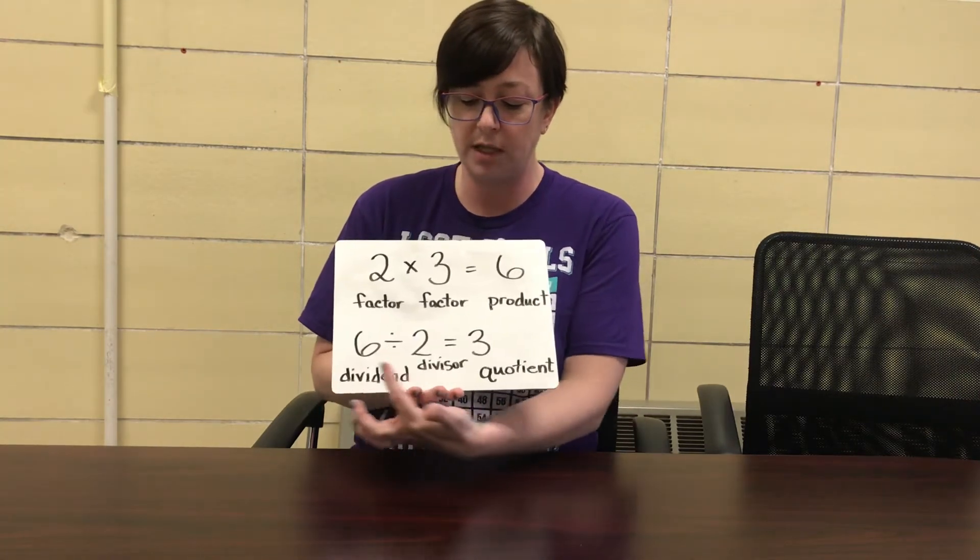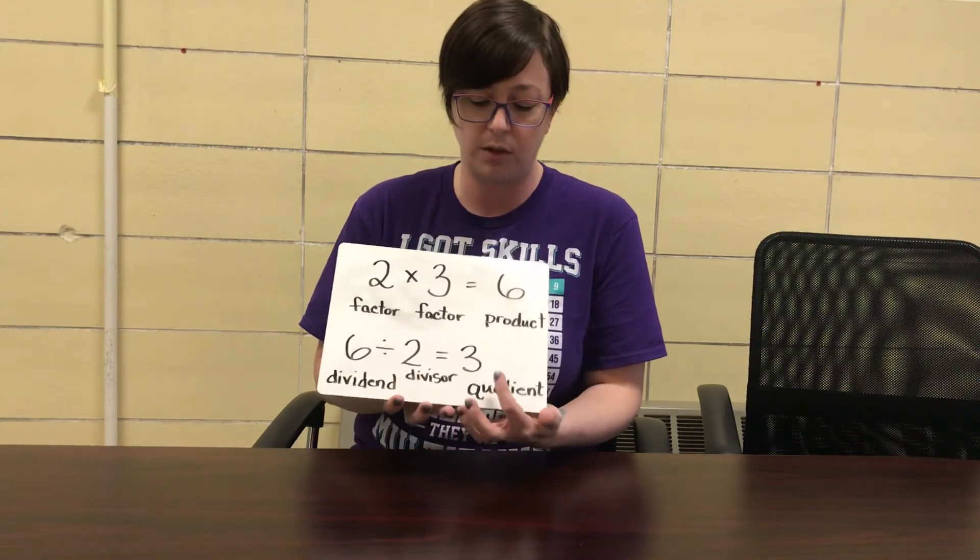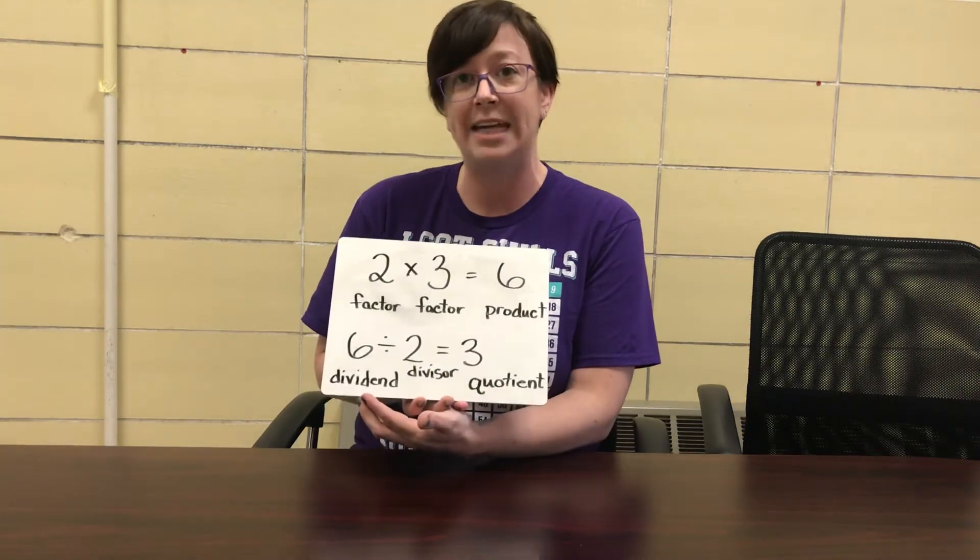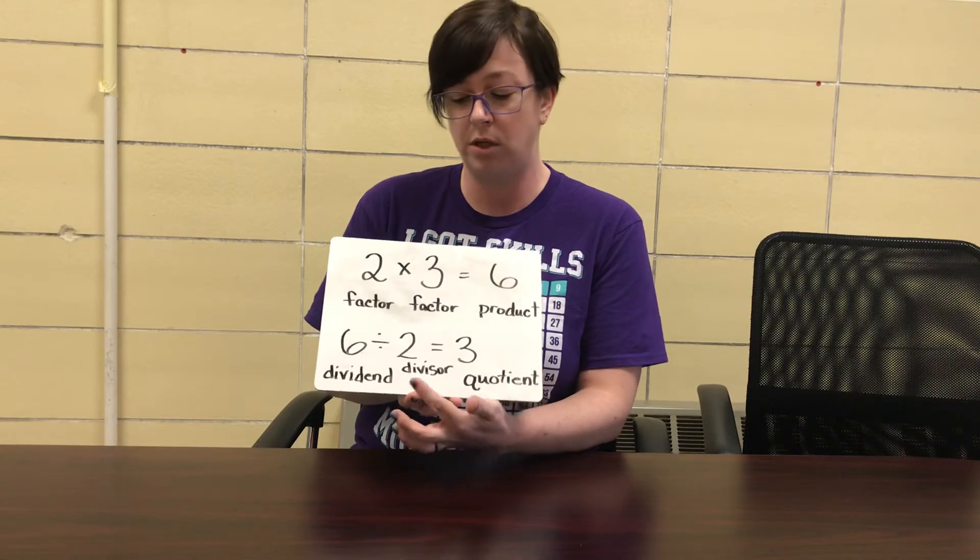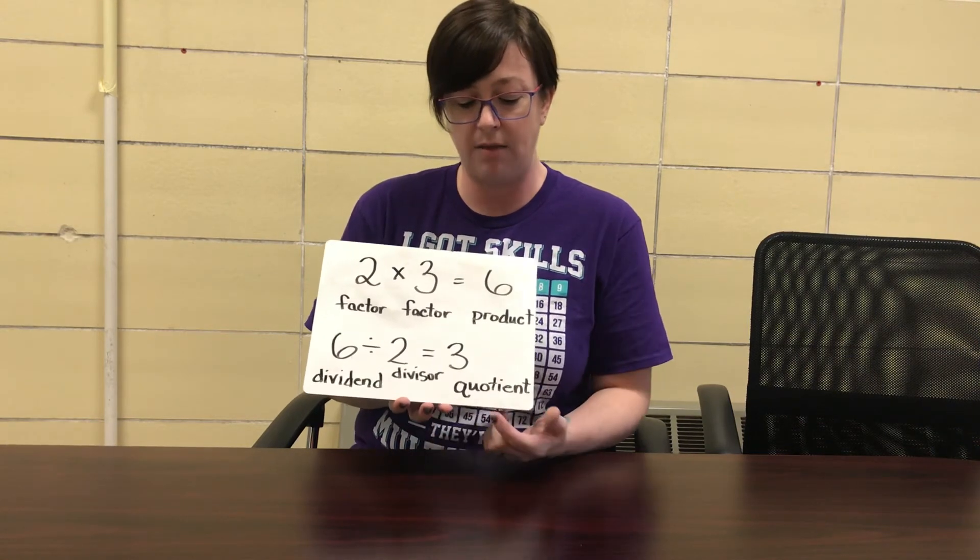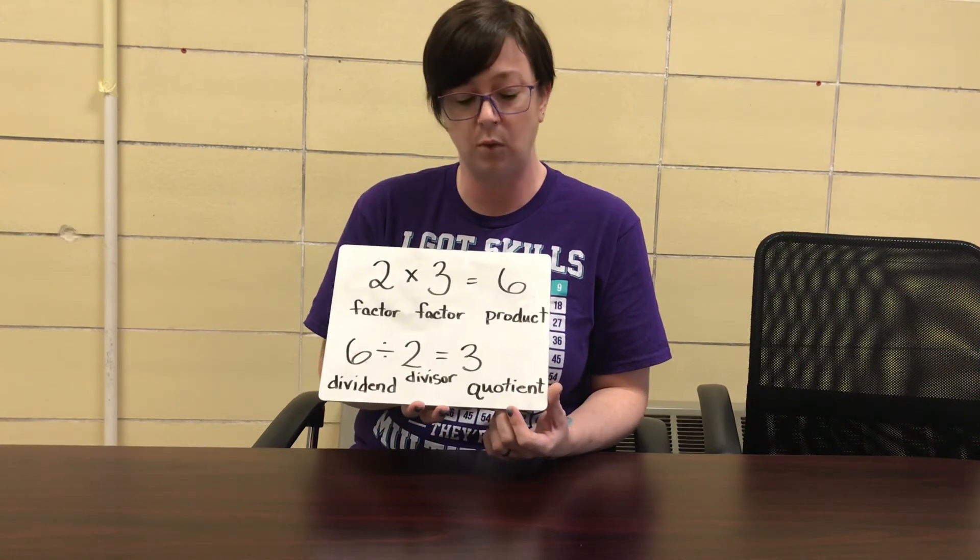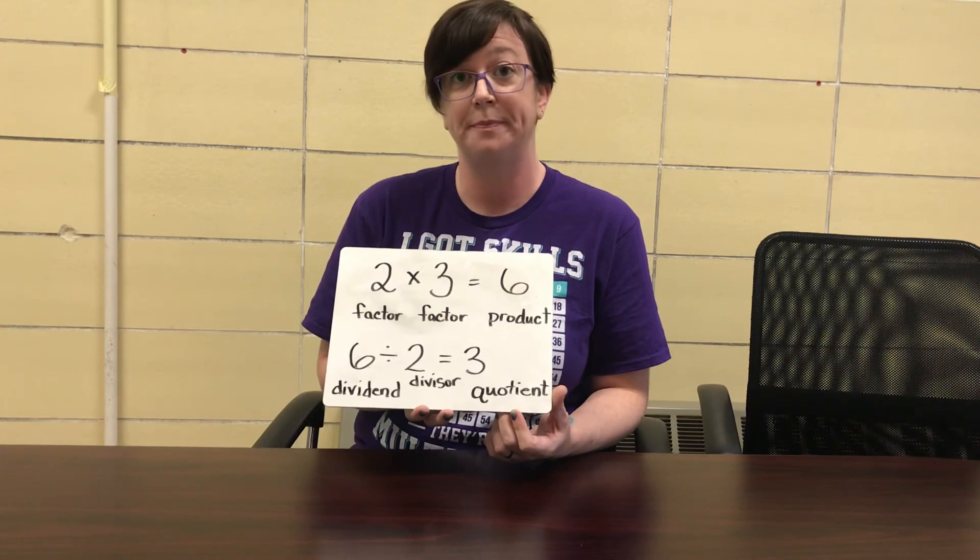Down here for division sentence, 6 divided by 2 is equal to 3. We have the dividend that we start with, the divisor that we are going to divide the number by, and then the answer in a division sentence would be called the quotient. Thank you.